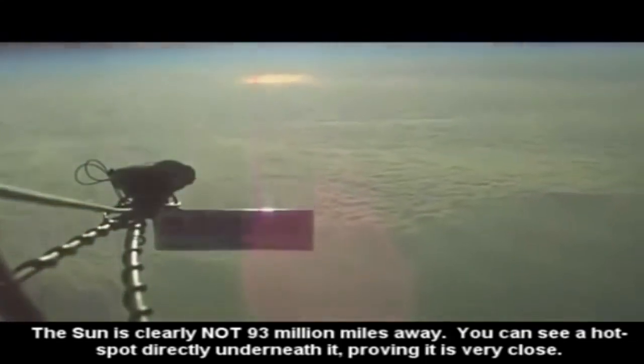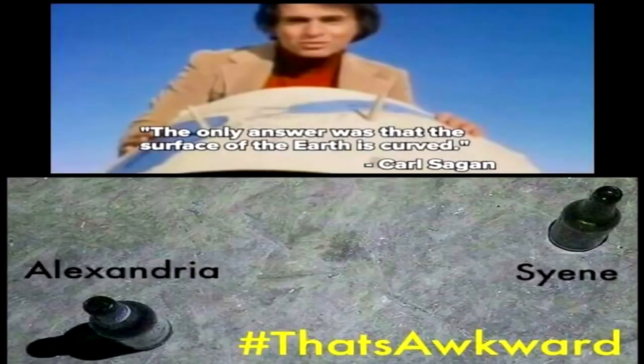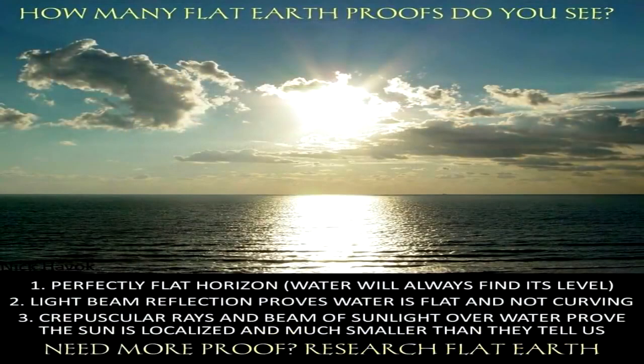Therefore if globe believers wish to be honest, they must admit it is their faulty assumption that only a distant sun with parallel rays could produce such results, which has led to their faulty conclusion of a curved earth — because flat earthers have always maintained that the sun was local, and the very existence of crepuscular rays renders the entire experiment invalid.